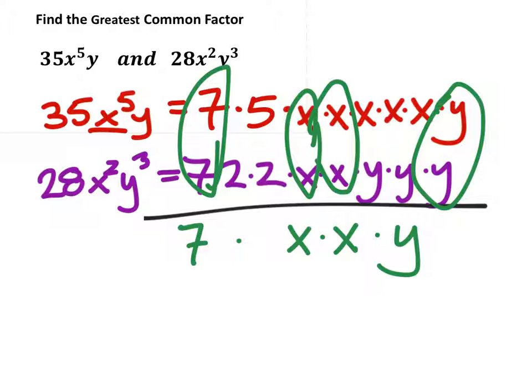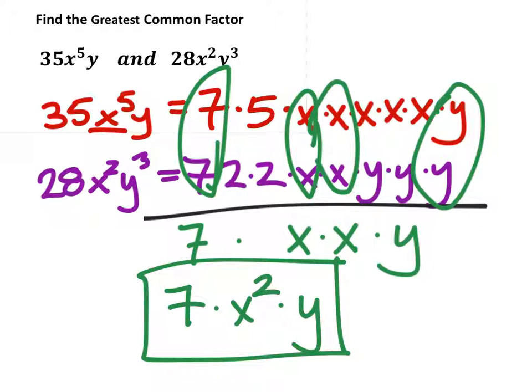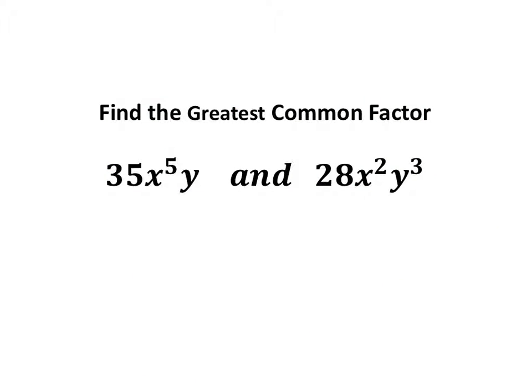So the greatest common factor between these two, because there are no other common factors between these two, my greatest common factor is 7 times x, we'll just make that x squared, times y. And that right there would be my final answer.